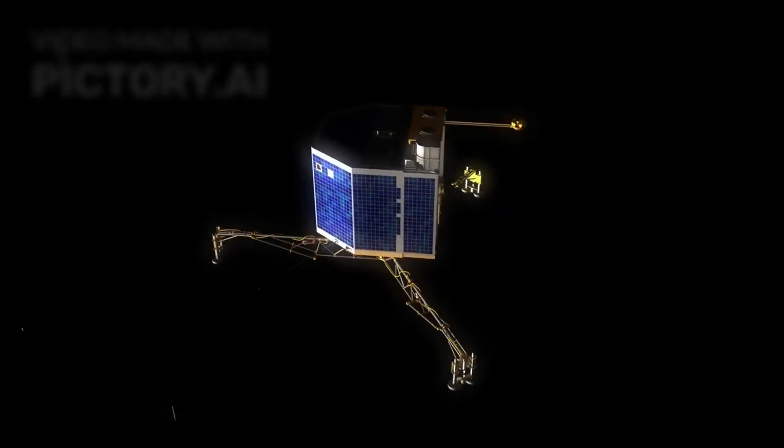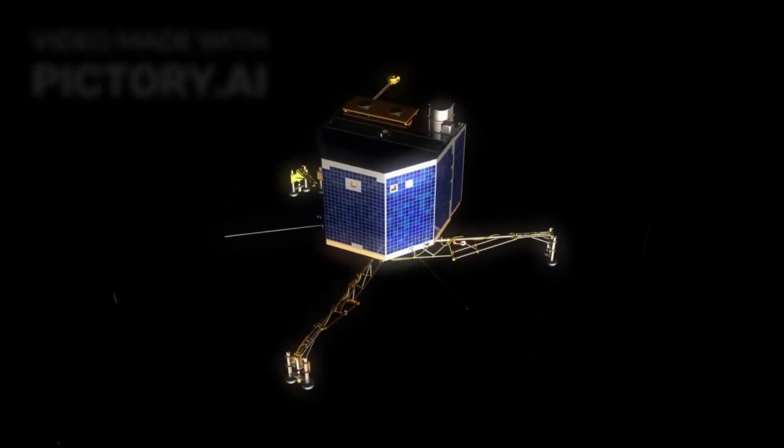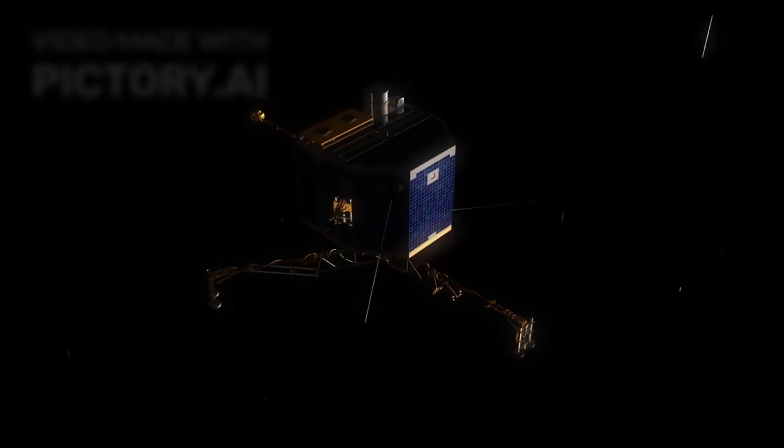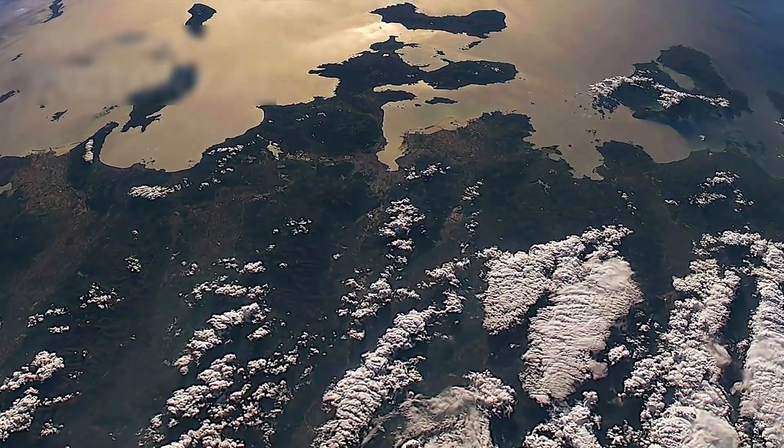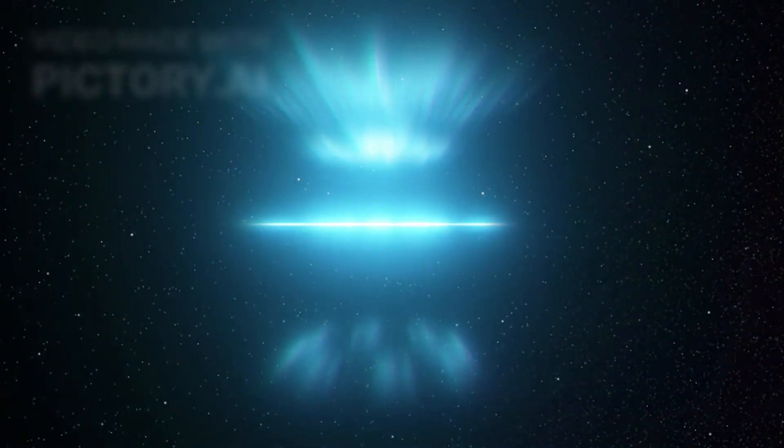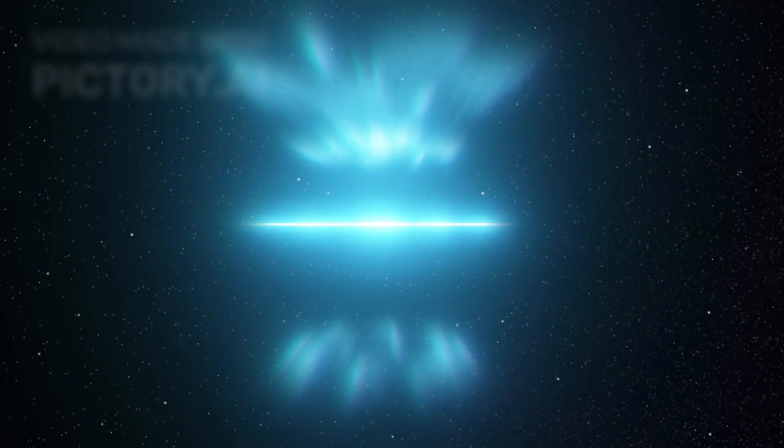At first, it was dismissed as just another harmless comet, like Oumuamua or 2i Borisov. But this one wasn't reflecting sunlight like a normal object—it was modulating it, pulsing in precise intervals as if responding to an invisible signal.